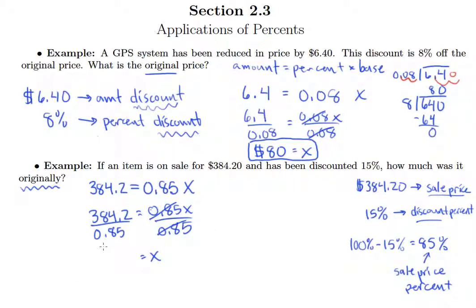Okay, we've got some division to do. So 384.2 divided by 0.85. Here's a situation where we've got to move that decimal over to the right two places, over to the right two places. So the division problem we really need to do is 38,420 divided by 85.